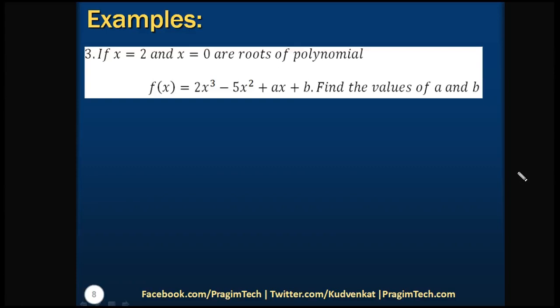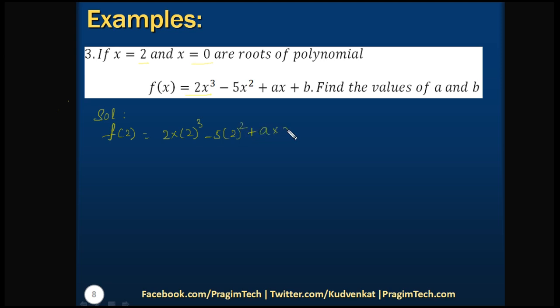Let's solve the third question. If x = 2 and x = 0 are roots of the polynomial f(x) = 2x³ - 5x² + Ax + B, find the values of A and B. Since x = 2 and x = 0 are roots, substituting them makes the polynomial value 0. Let us consider f(2) first: substituting x = 2 gives 2(2)³ - 5(2)² + A(2) + B, and since it's a root we equate f(2) to 0.